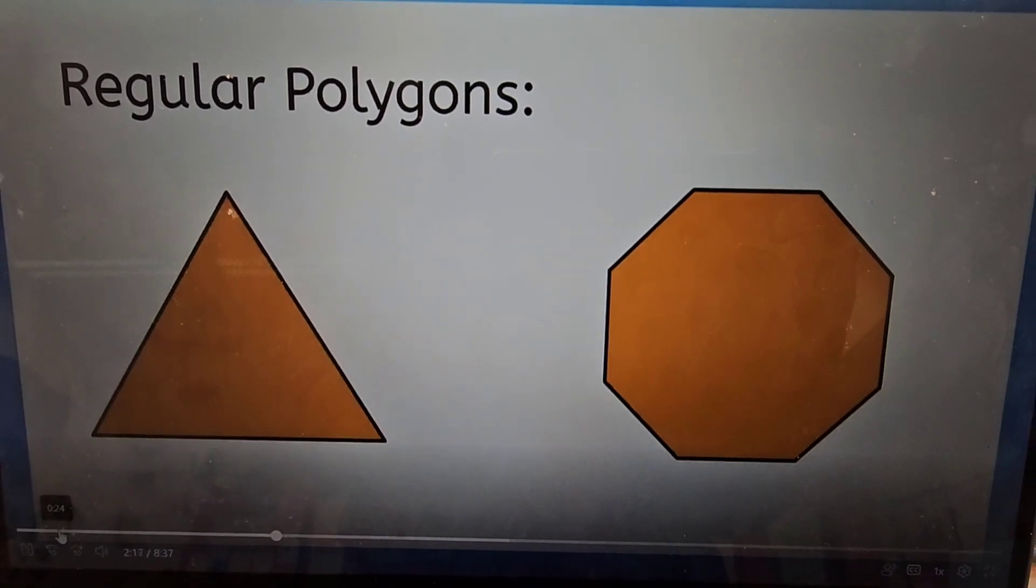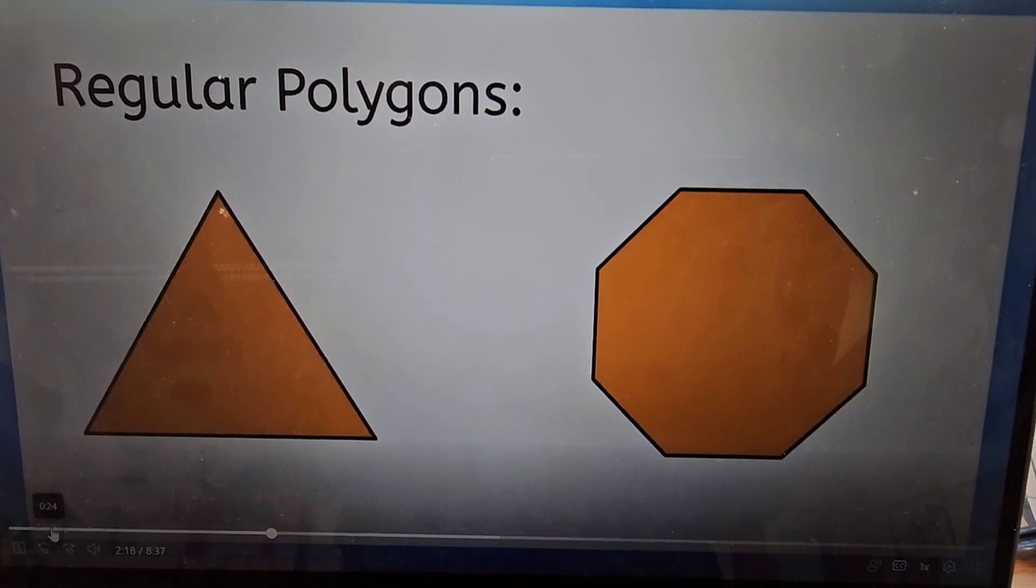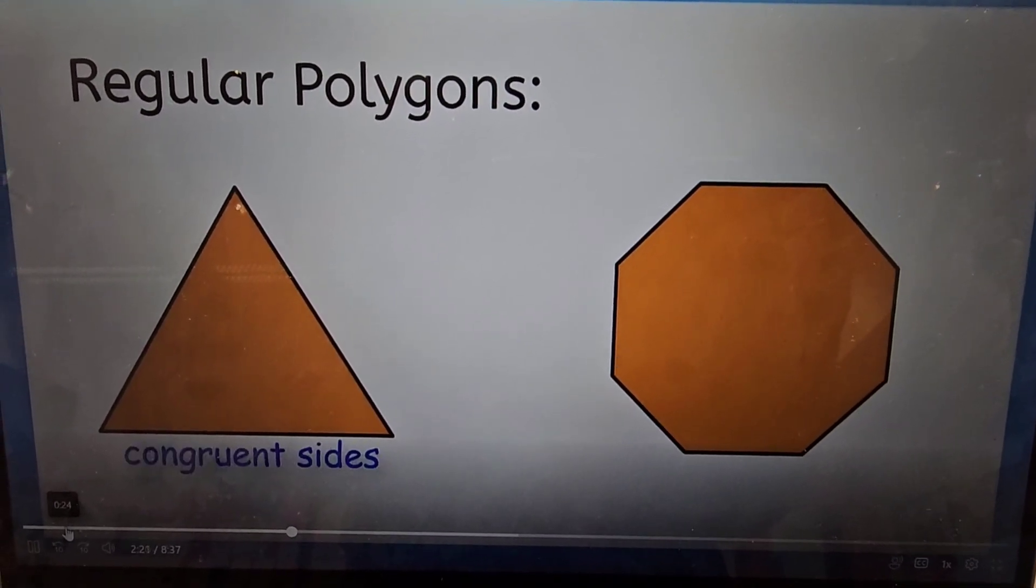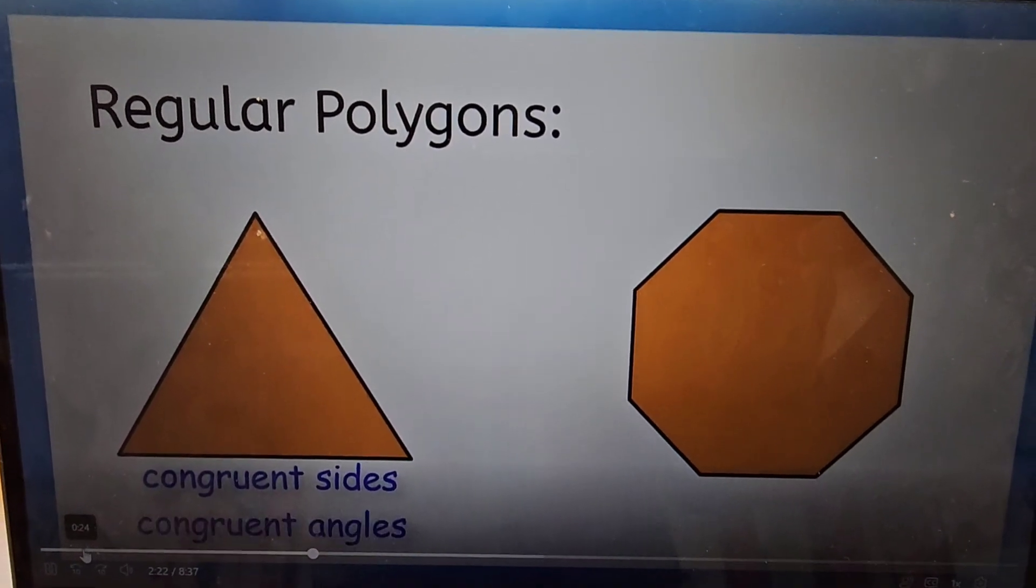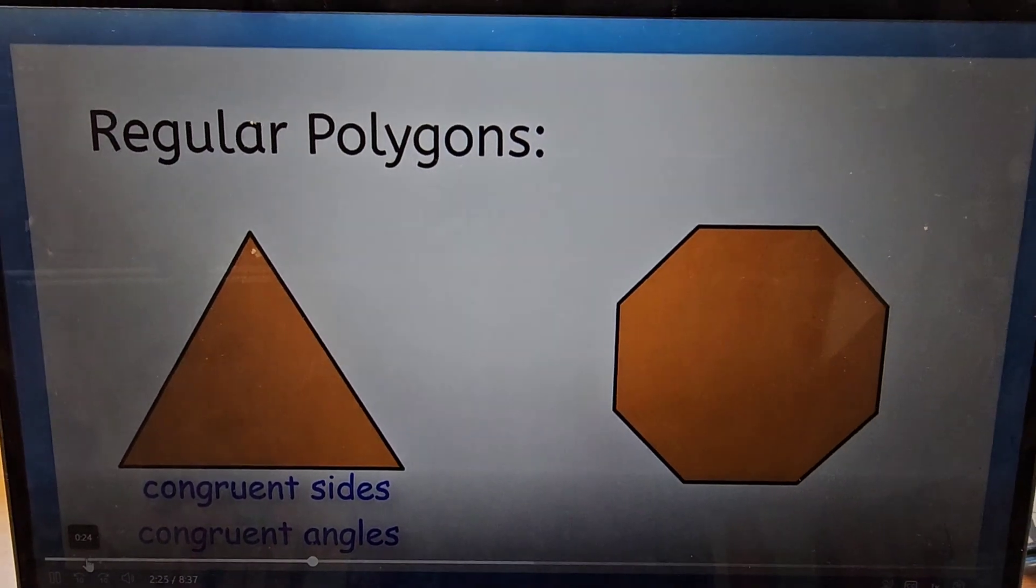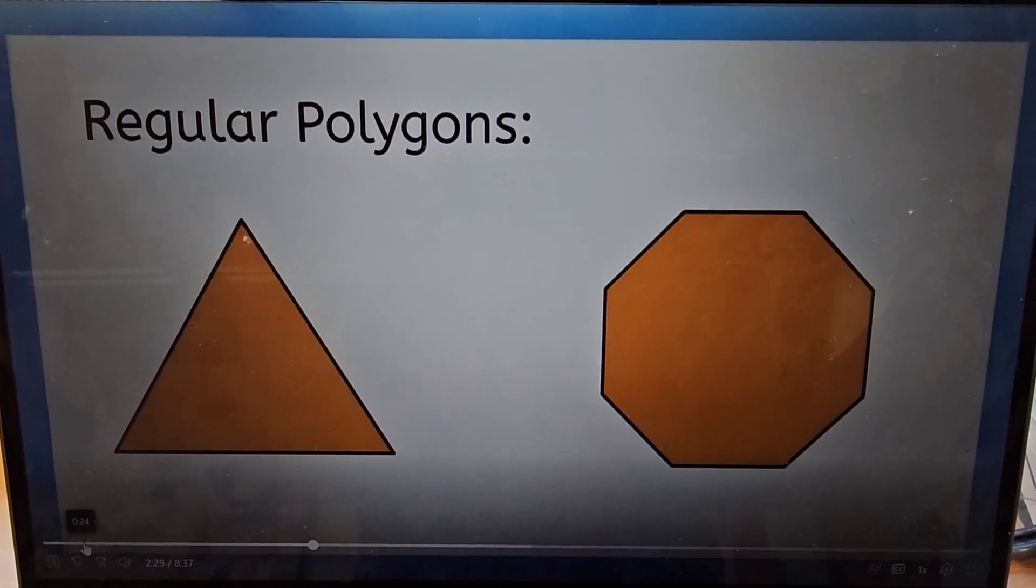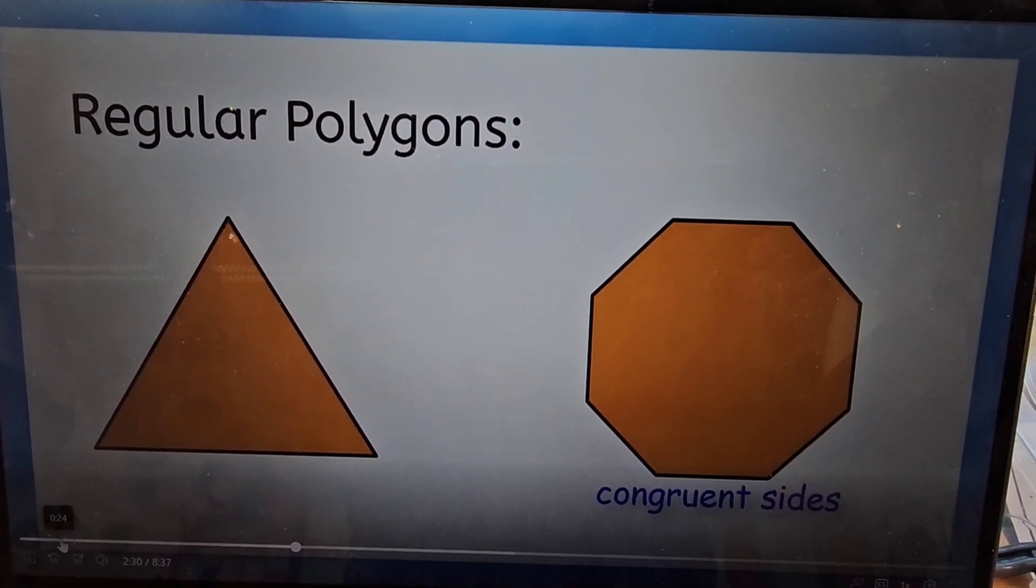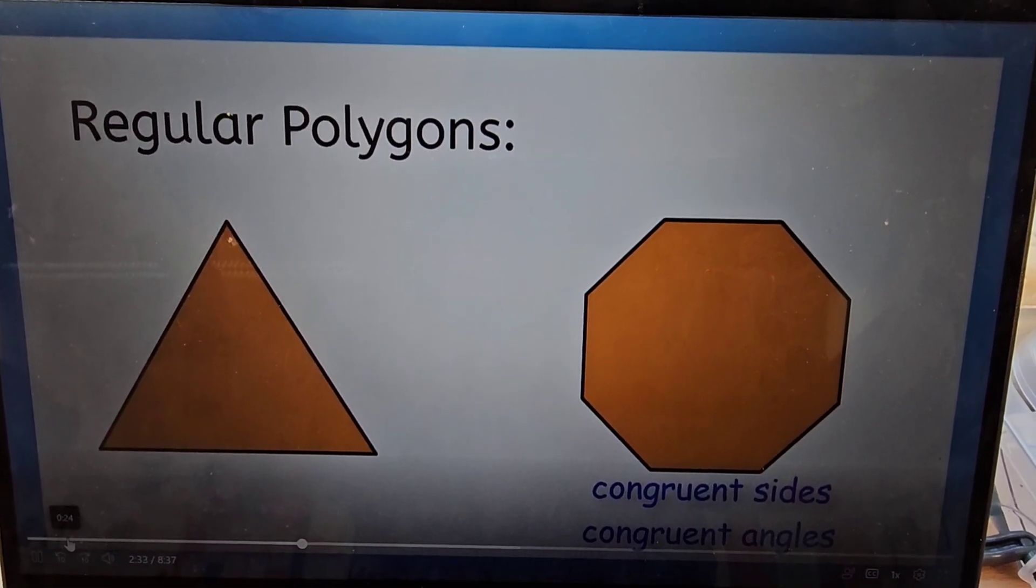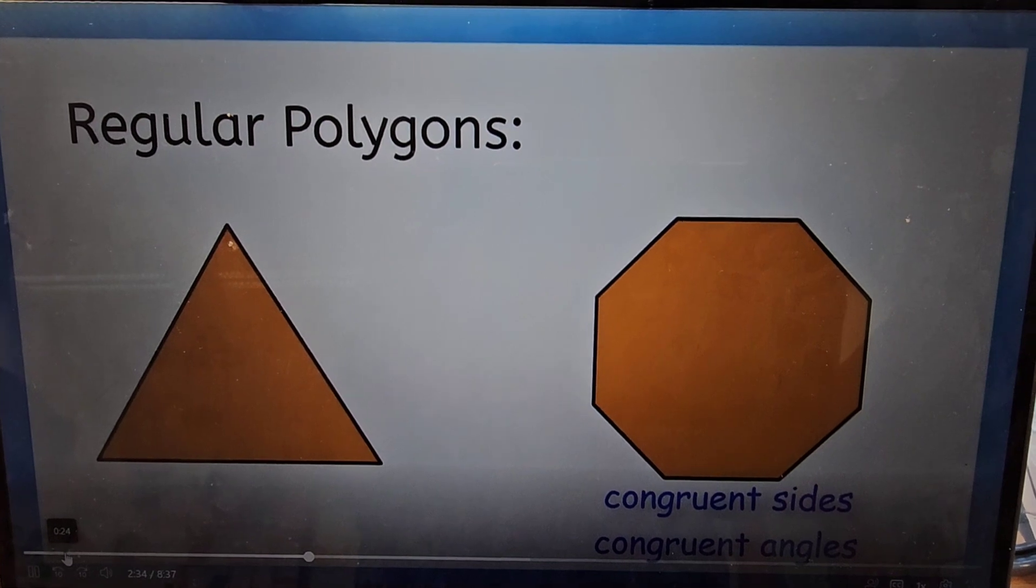The equilateral triangle is a regular polygon. All three sides are the same length, and all three angles are 60 degrees. This octagon is also a regular polygon. All eight sides are the same length, and the eight angles are all 135 degrees.